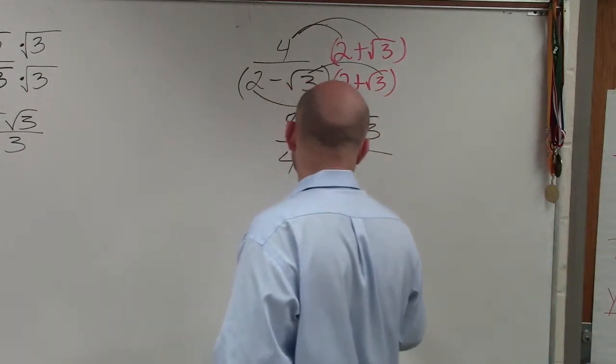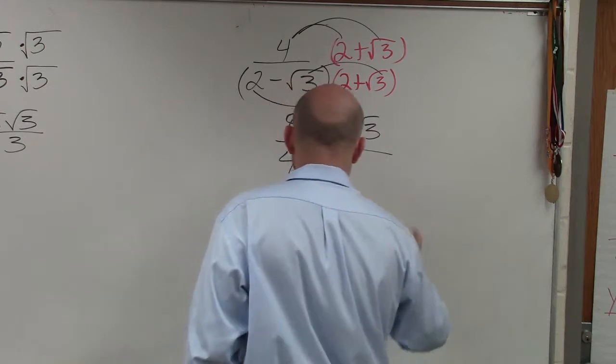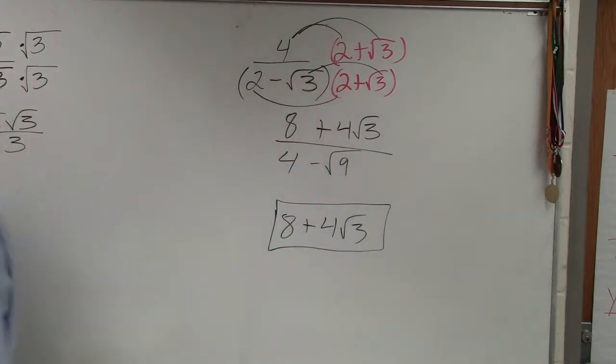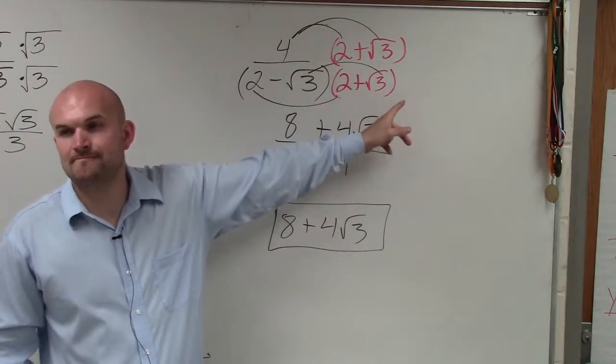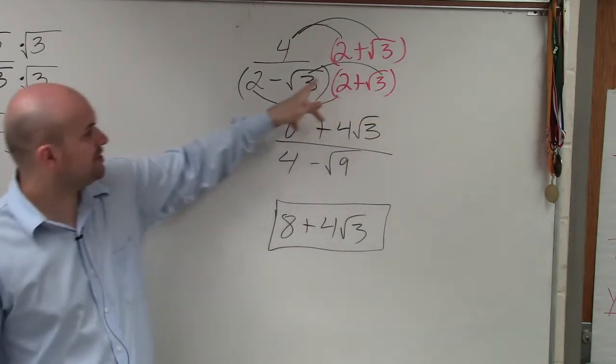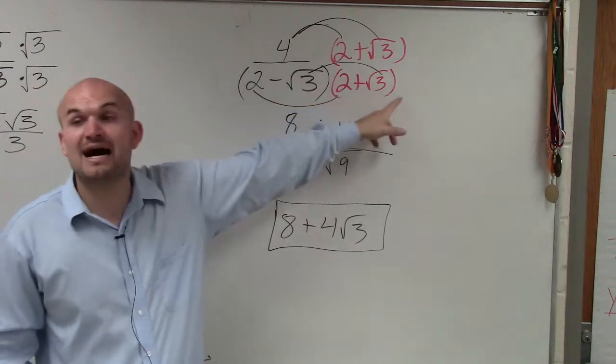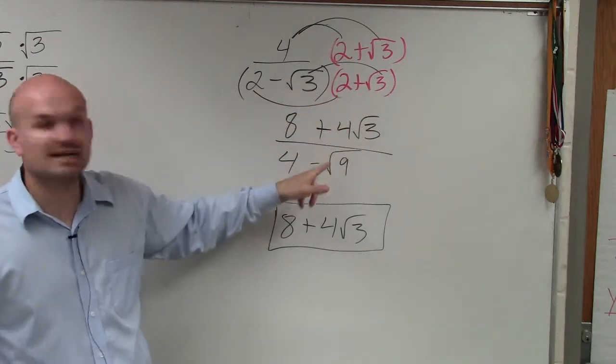So my final answer is 8 plus 4 square root of 3. [Student asks about negative signs] Negative square root of 3 times the square root of 3—sorry if I misspoke. You're multiplying negative square root of 3 times positive square root of 3, which gives negative square root of 9.